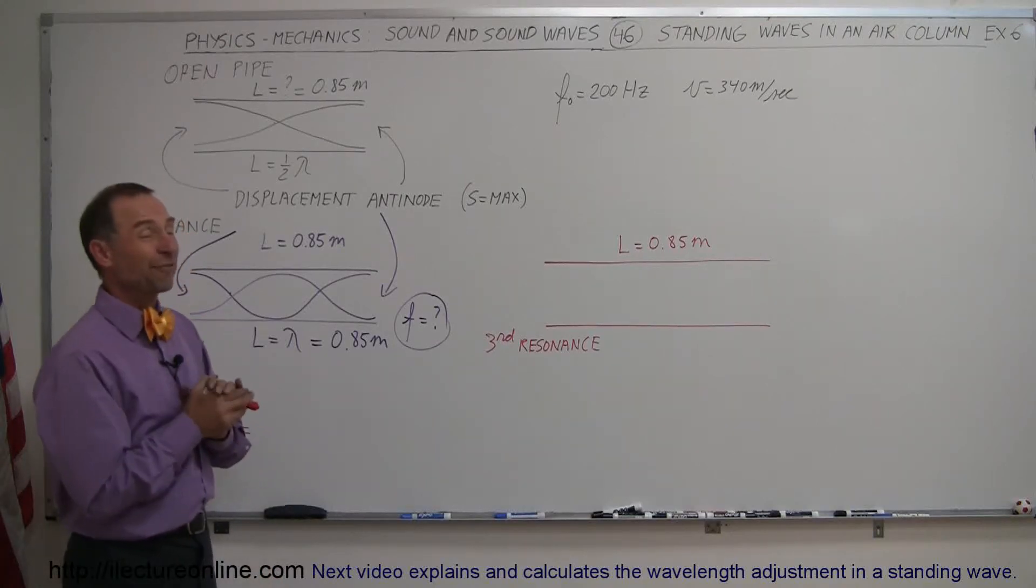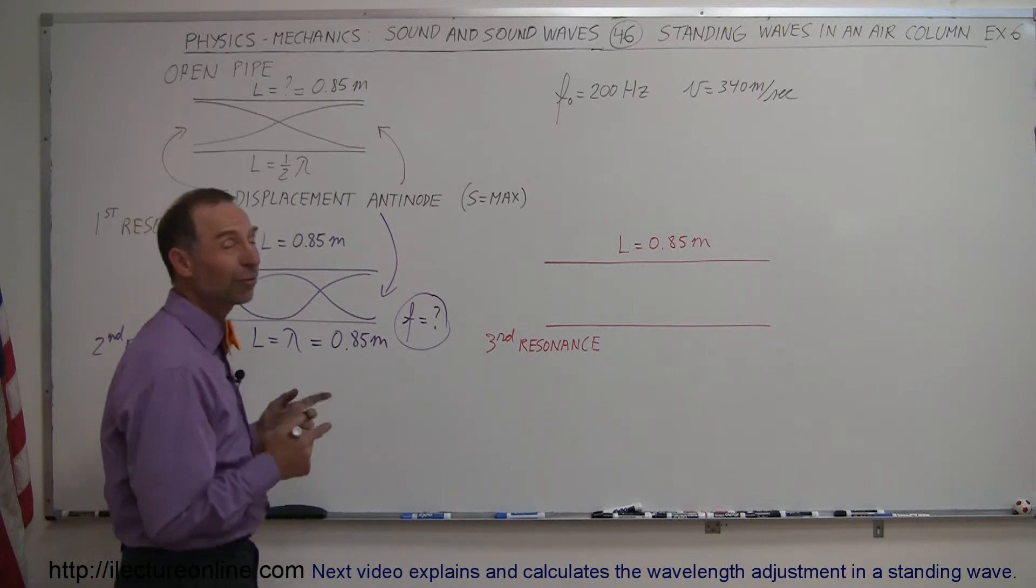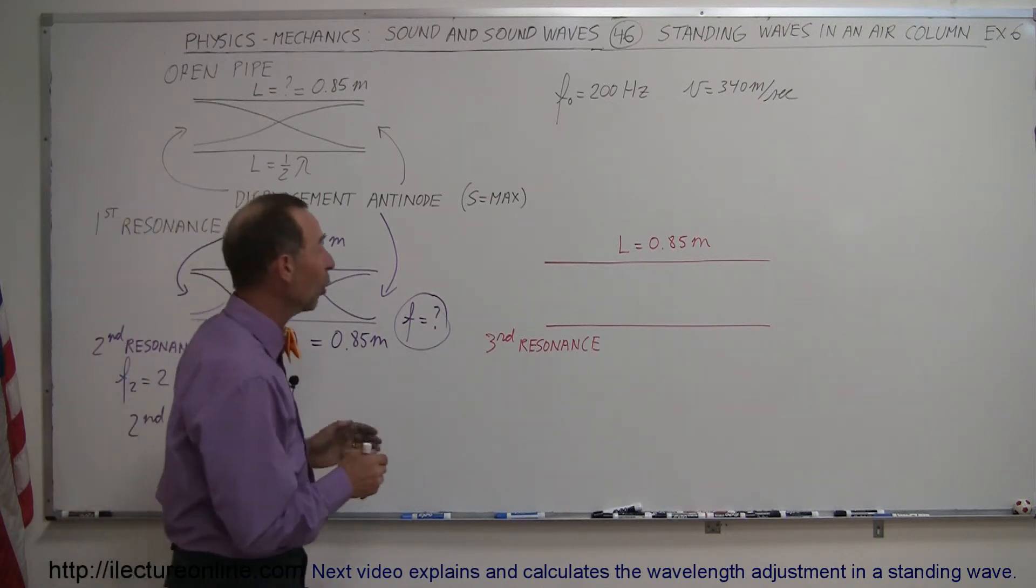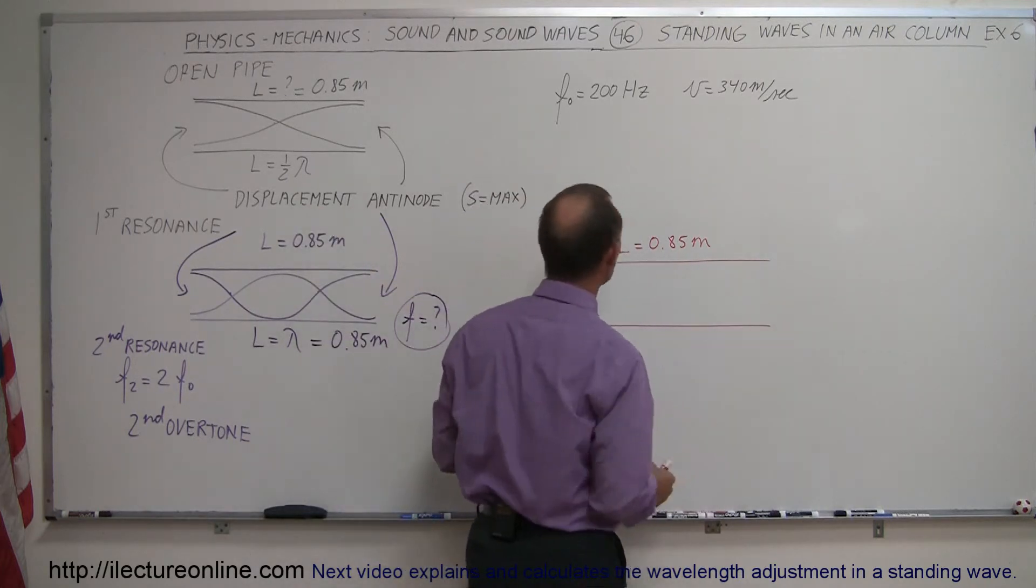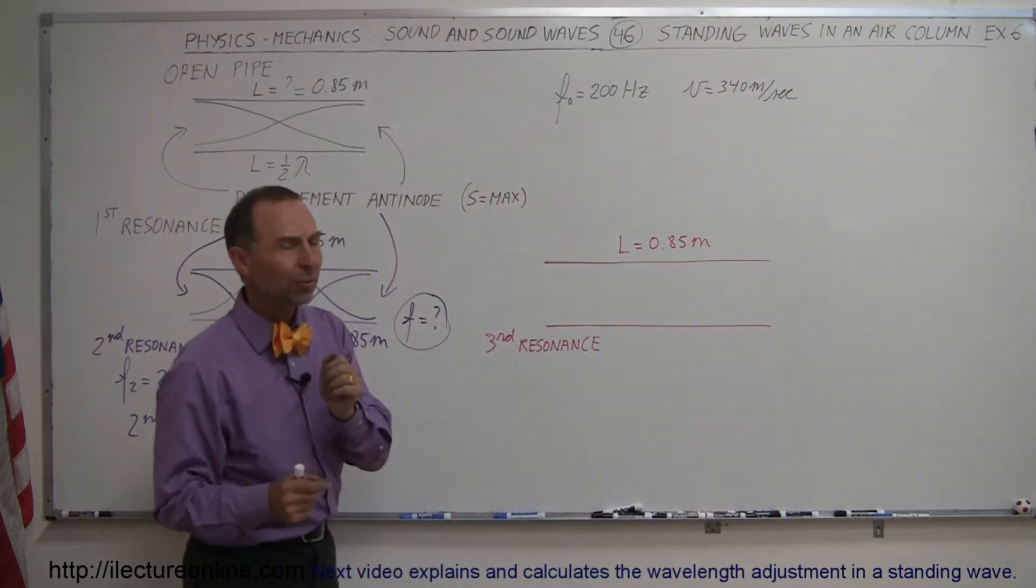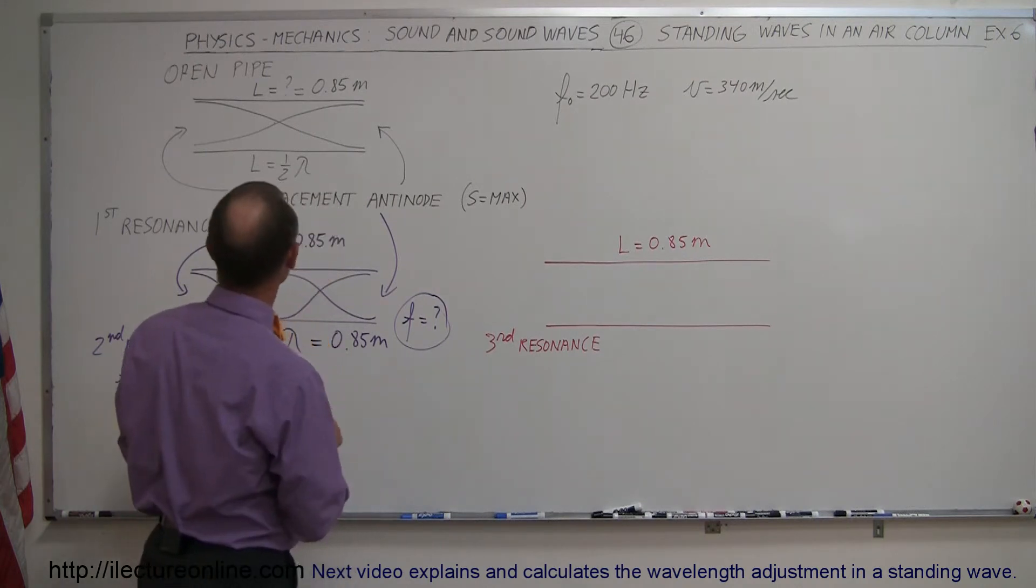In our next example, we're going to figure out what a third resonance frequency standing wave looks like in an open-ended pipe. Again, an open-ended pipe means that you're going to have displacement antinodes on either side, which means maximum displacement of the air molecules, meaning zero pressure difference.